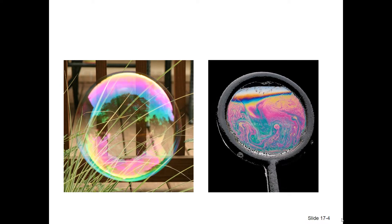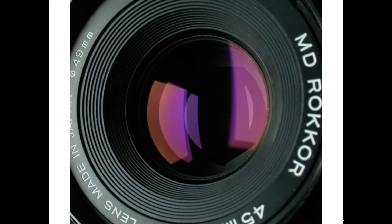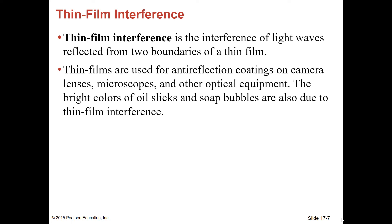Some more pictures showing thin film interference. They also use thin films to coat camera lenses. Thin film interference is the interference of light waves reflected from two boundaries of a thin film. Thin films are used for anti-reflection coatings on camera lenses, microscopes, and other optical equipment. The bright colors of oil slicks and soap bubbles are also due to thin film interference.